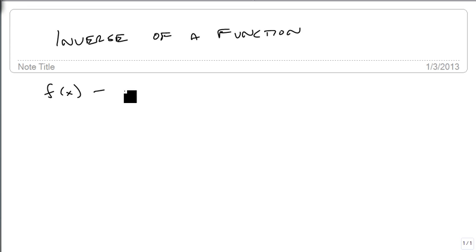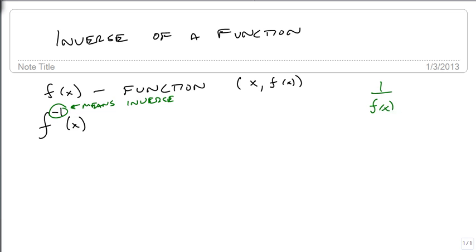So if f(x) is the function, and it has points (x, f(x)), then our inverse function we're going to denote as f to the minus 1 power of x. And since this is function notation, we know that this minus 1 means inverse. It does not mean 1 over f(x). So don't do that.